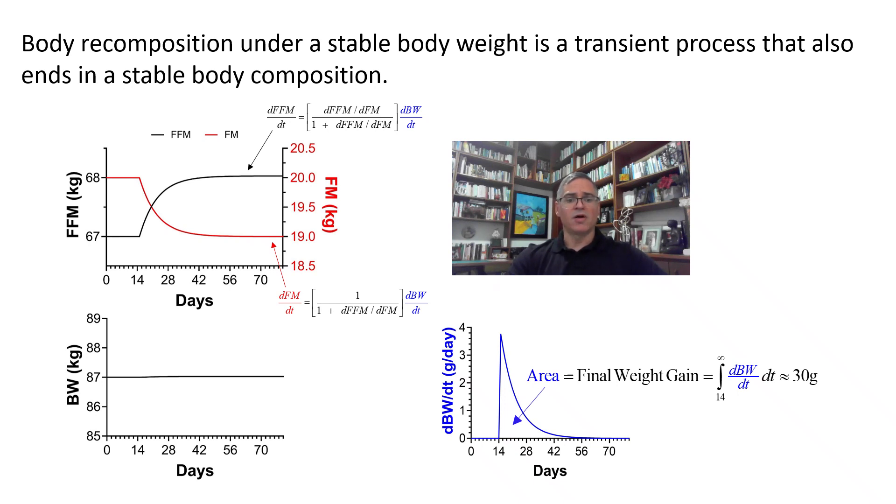Observe that as the body weight time derivative becomes zero, fat free mass and fat mass become stable, as predicted by the body composition equations. Thus, body recomposition under a stable body weight is a transient process that over time also ends in a stable body composition, as observed in the general population.